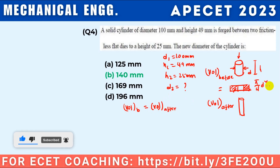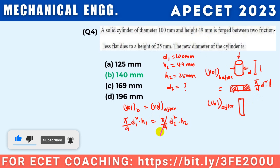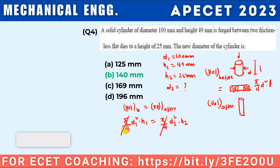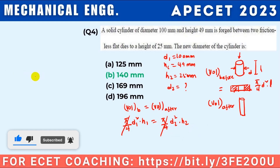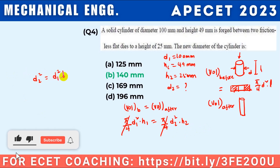The volume before is equal to volume after forging. The volume of the cylinder is (π/4)·d²·l. So: (π/4)·d1²·h1 = (π/4)·d2²·h2. The π/4 cancels, giving d2² = d1²·(h1/h2), therefore d2 = √(d1²·h1/h2).